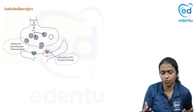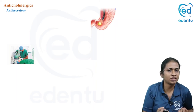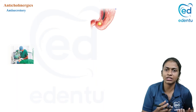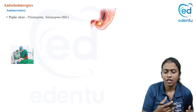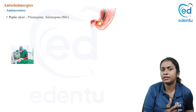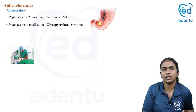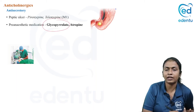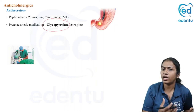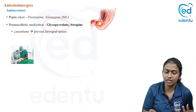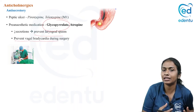For anti-secretory action: M3 receptor blockade reduces secretion from lacrimal glands, gastric glands, and bronchial glands. We use pirenzepine and telenzepine for peptic ulcer, though rarely now as better agents exist. As pre-anesthetic agents, these drugs are still very useful. Glycopyrrolate is preferred over atropine as a pre-anesthetic agent because it has fewer side effects. The rationale for use as pre-anesthetic agents is: reduction of secretions, prevention of laryngeal spasm, reduction of aspiration pneumonia risk, and prevention of vagal bradycardia during surgery.